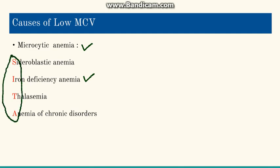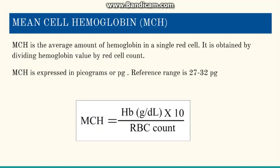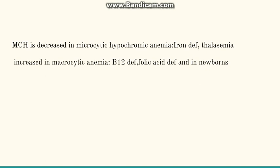Going to the second RBC index, that is mean cell hemoglobin (MCH). It denotes the average amount of hemoglobin present in a single RBC. The calculation is: we divide the hemoglobin by the RBC count, which gives the amount of hemoglobin in each red blood cell. The unit used is picograms, and the reference range is 27 to 32 picograms. MCH is decreased in cases of microcytic hypochromic anemia like iron deficiency and thalassemia. MCH is increased in macrocytic anemia due to increase in RBC size, as seen in B12 deficiency and folic acid deficiency.